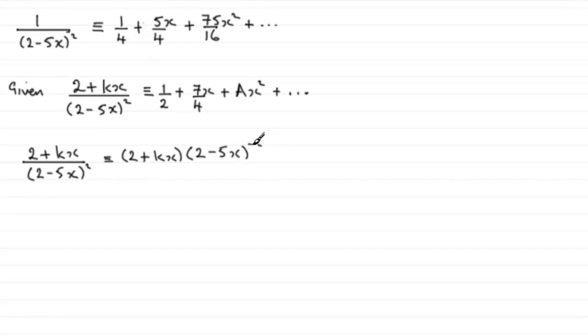Now, we actually expanded this earlier. We found that this was exactly the same as this expansion. So what I can say is that this is identical to 2 plus kx, then multiplied by the quarter plus 5 quarters x plus 75 sixteenths x squared, and so on.